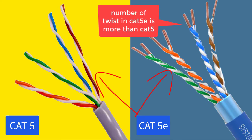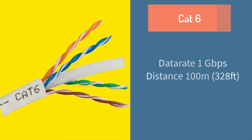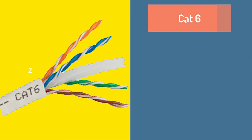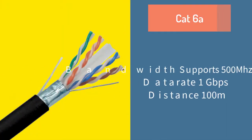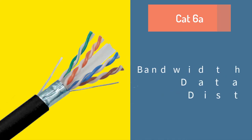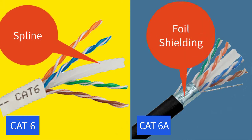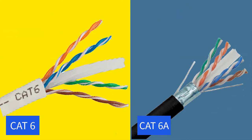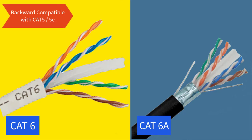Cat6 cable also supports 1 Gbps data rate up to 100 meters, same as cat5e. But with greater bandwidth support of 250 MHz, it can achieve data rates up to 10 Gbps at shorter distances of 37 meters. There is an upgraded version, cat6a, which supports 500 MHz bandwidth and 10 Gbps data rate up to 100 meters. Cat6 uses a physical separator called a spline to reduce crosstalk and foil shielding to reduce electromagnetic interference. Cat6 is used in commercial buildings while cat6a is used in data centers as well. Cat6 is backward compatible with cat5 and cat5e.